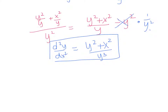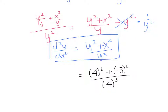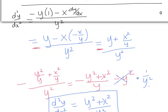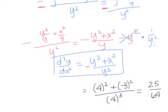Now we evaluate the second derivative at the point negative 3, 4. Plugging in: 4 squared plus negative 3 squared, divided by 4 cubed. That gives us 16 plus 9 equals 25, divided by 64. Don't forget to bring down the negative sign from earlier. So the final answer is negative 25 over 64.